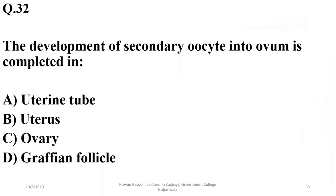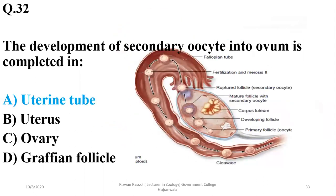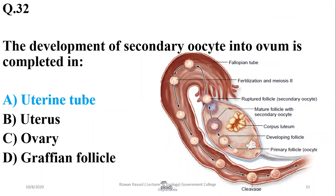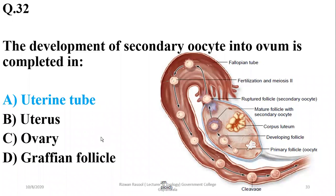Number thirty-two: the development of the secondary oocyte into the ovum is completed in the uterine tube, because the secondary oocyte is released during ovulation into the oviduct or fallopian tube, and it is converted into the ovum only after it receives a sperm stimulus. So conversion of the secondary oocyte into the ovum in the human body requires the fertilization process. It will be formed in the fallopian tube and is converted into a zygote after the fusion of the sperm nucleus, so the right option will be alpha.